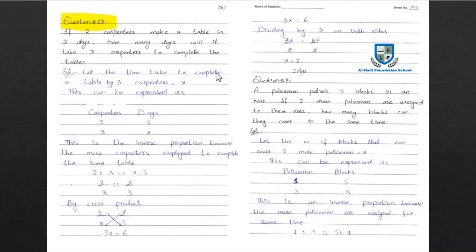Let the time taken to complete a table by three carpenters be x. This can be expressed by placing carpenters on one side and days on the other: carpenters were 2, then 3, and days were 3, then x. This is inverse proportion, because the more carpenters employed, the fewer days needed.